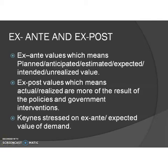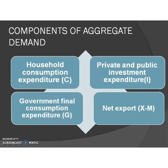Next are the components of aggregate demand. There are four major components of aggregate demand. The first is household consumption expenditure — that is, the expected expenditure incurred by households on consumption of final goods and services. Total consumption demand may be private consumption expenditure and public consumption expenditure.